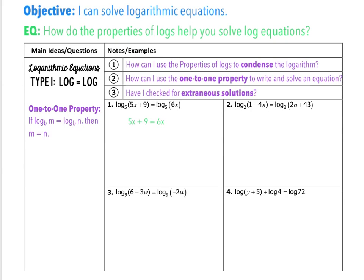Now I need to solve it. I'm going to subtract 5x from this side and I end up with x equals 9. My last question is always, have I checked for extraneous solutions? I want to make sure that when I plug that x value back in, I don't get a log that is negative. When I plug it back in, I end up with 54 and 54, which is positive. So it's not only a check that I solved my equation correctly, but also a check that it's not negative. I'm good — that can be my solution.